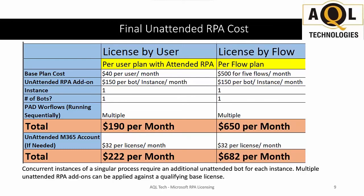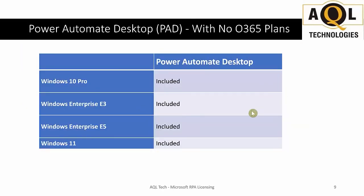For licensing by flow — one bot with one or multiple desktop flows running in sequential order — the cost is $650 per month without the unattended Microsoft 365 licensing, and $680 per month with it. That additional $32 per license per month accounts for the difference in both cases.